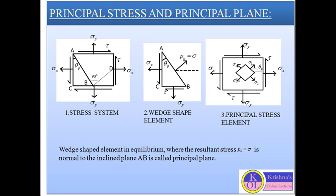From this stress element, we cut a wedge element at angle theta, and this wedge-shaped element will be used to find out the equations of principal stresses — minor principal stress and major principal stress. The wedge-shaped element at angle theta P is in equilibrium, where the resultant stress sigma is normal to the inclined plane AB, which is called the principal plane. By resolving all the forces of this wedge-shaped element, we can find out the equations for the principal stresses.